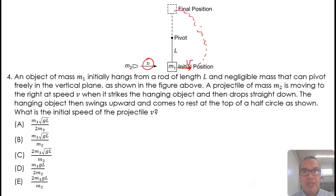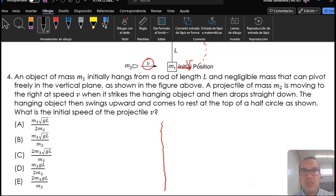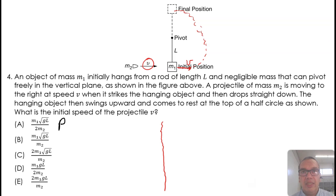We can mentally separate the situation into two consecutive processes. On the one hand, we have transfer of momentum from the projectile to the hanging mass M1. On the other hand, the hanging mass will move up and in that process, kinetic energy will be converted into potential energy until M1 comes to rest at the highest point.